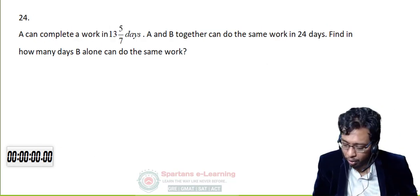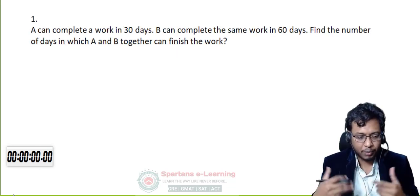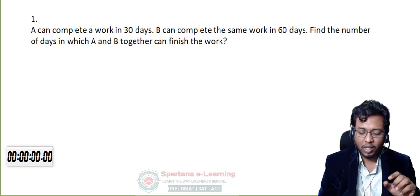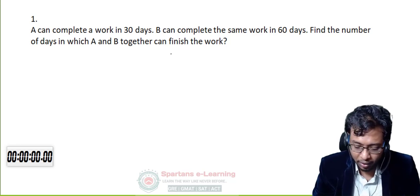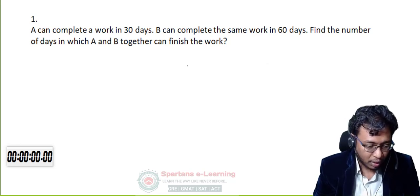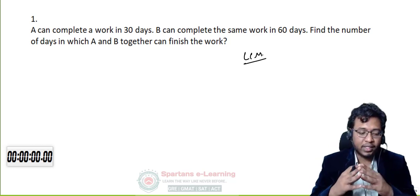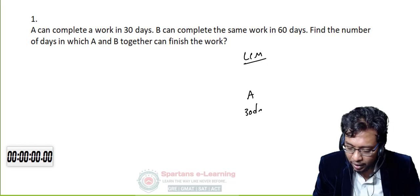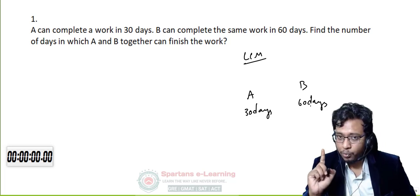Be patient because we are going to solve around 24 questions. For the first question I will take it slow, then our speed will increase. By the midpoint you will be able to answer the questions orally. Now we will solve using the second method — the LCM method. A can do a piece of work in 30 days and B can complete the same work in 60 days. In the fraction method we took our work as 1, but in the LCM method we consider our total work as the LCM of 30 and 60.